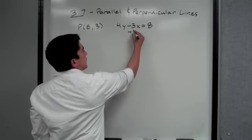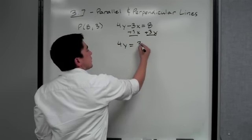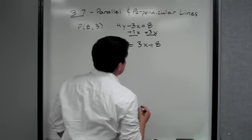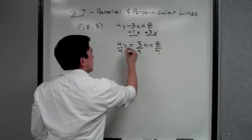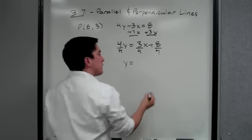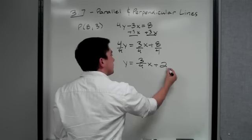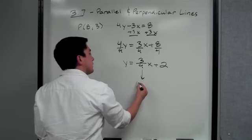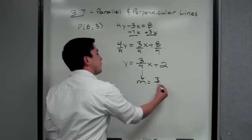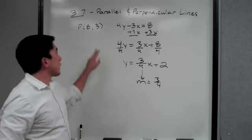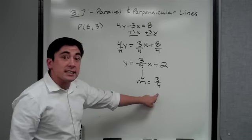To find the slope, we move the 3x: so we have 4y equals 3x plus 8. Then we divide to get y by itself: y equals three-fourths x plus two. So our slope is three-fourths. The line parallel to this will also have a slope of three-fourths.